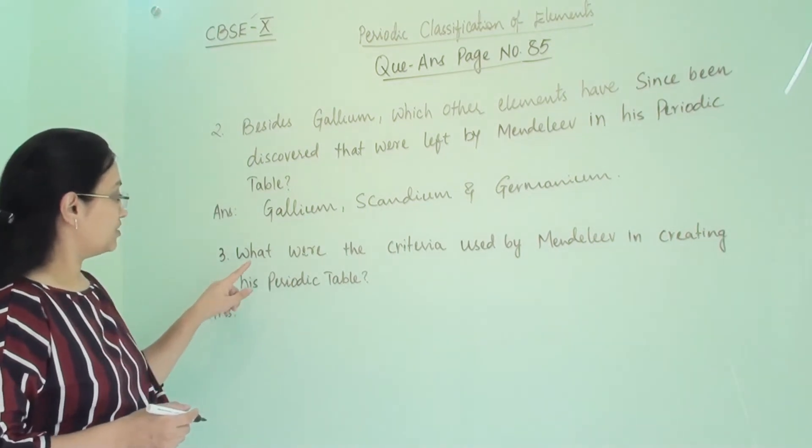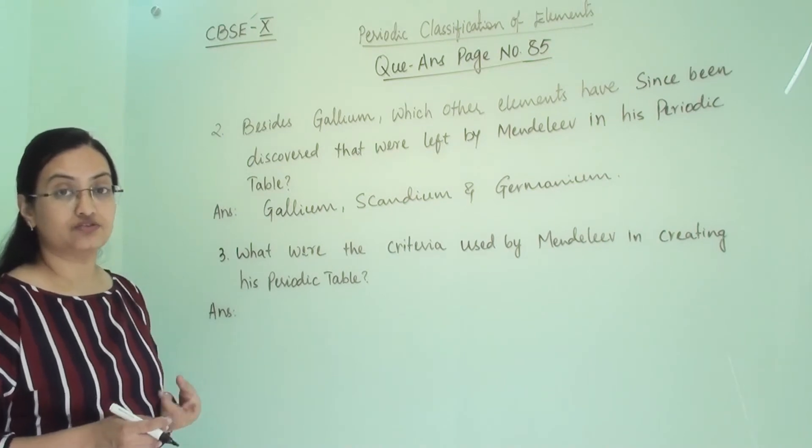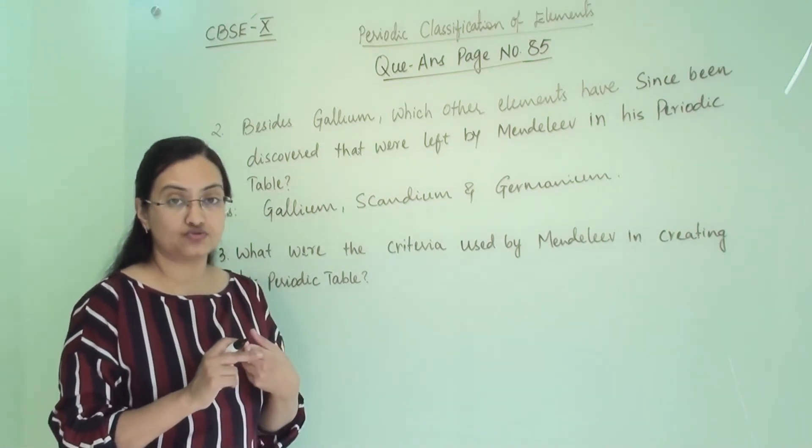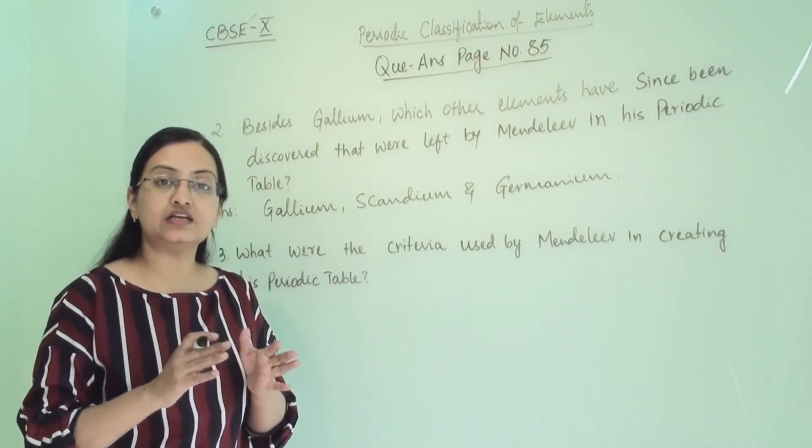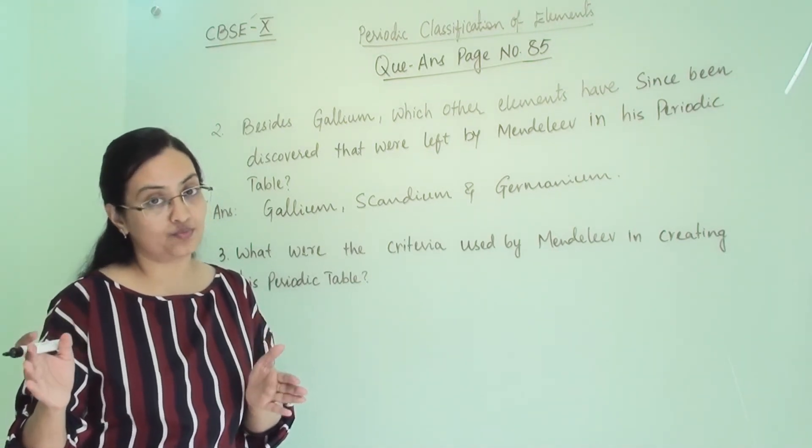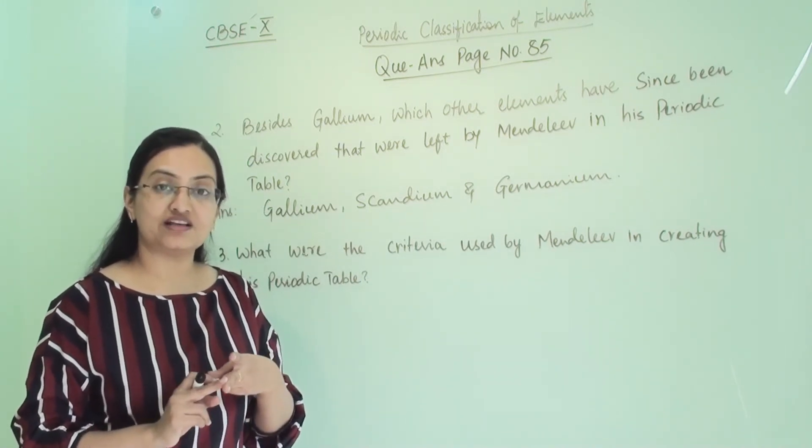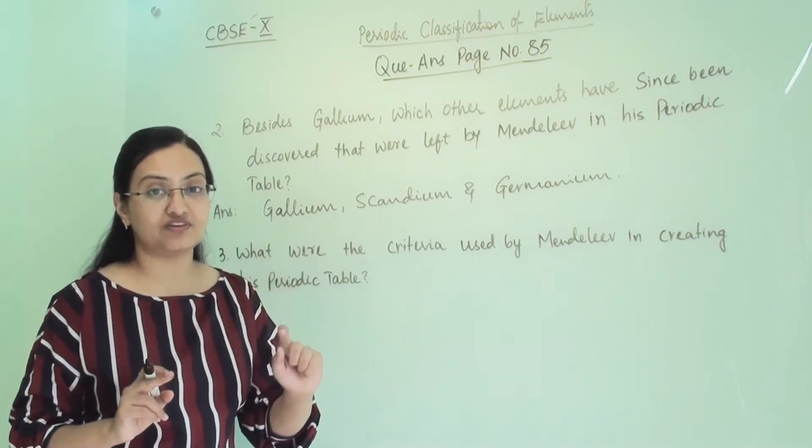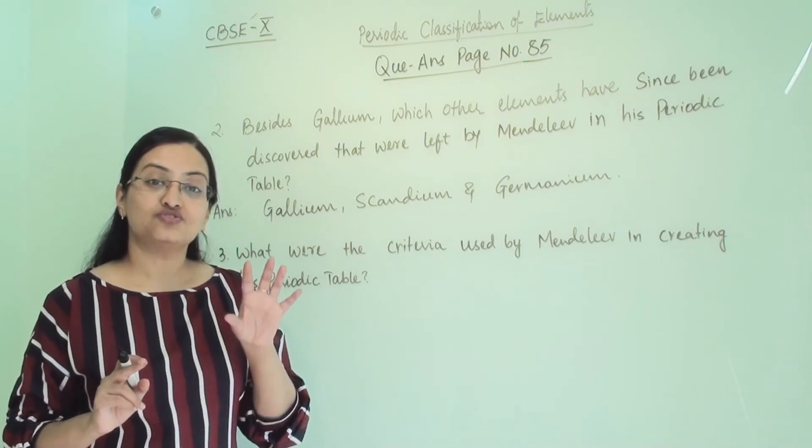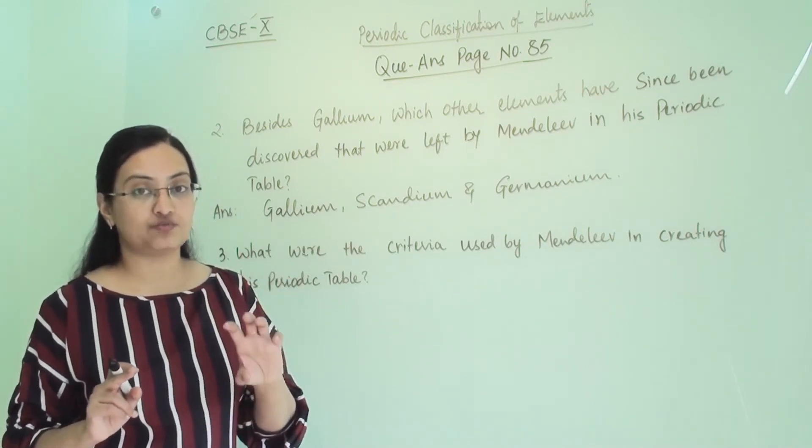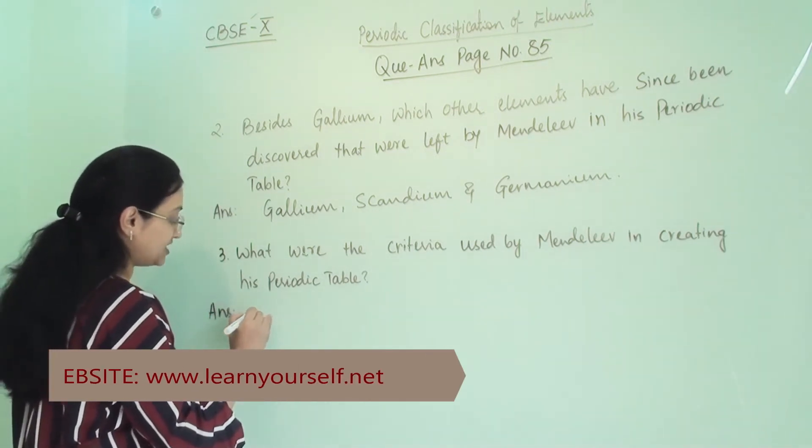Now the third question: What were the criteria used by Mendeleev in creating his periodic table? So he used two criteria to arrange the elements. First is he arranged all the elements in increasing order of their atomic mass. Second is he also compared their molecular formulas and properties when the specific element will form a compound with hydrogen and oxygen.